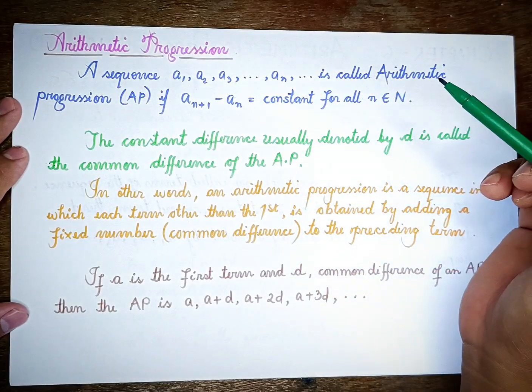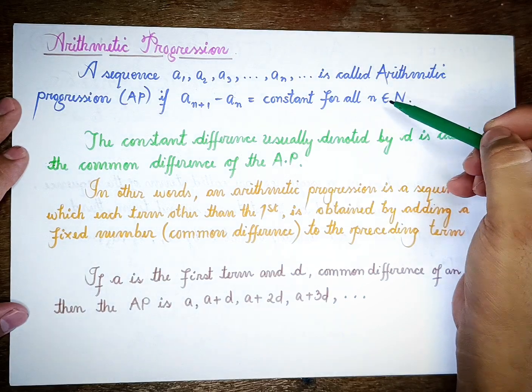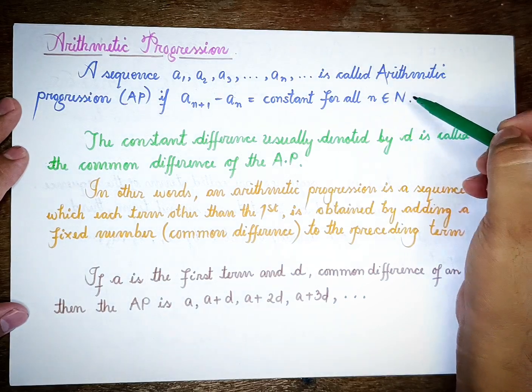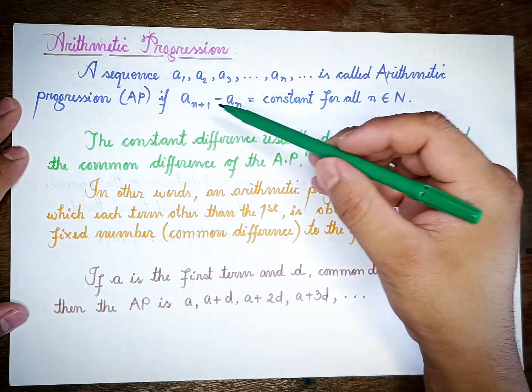Arithmetic progression is constant for all n belonging to the natural numbers.